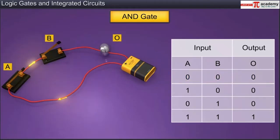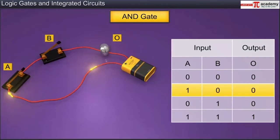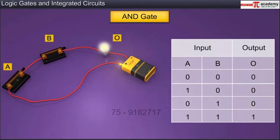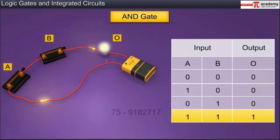When switch A is closed and switch B is open, input A is one while input B is zero. The bulb still remains off, hence the output is still zero. When switch A is open and switch B is closed, input A is zero while input B is one; the bulb again remains off, hence the output is again zero. When both switches A and B are closed, both inputs A and B are one; the bulb turns on, indicating that the output is one.